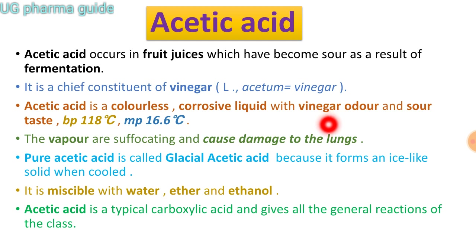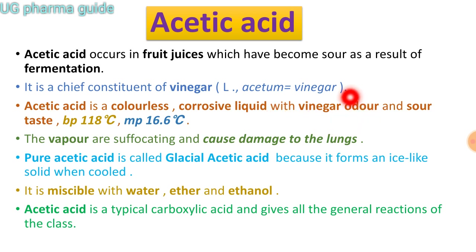तो acetic acid क्या है? Fermented fruit juice में पाया जाता है. जैसे कि apple vinegar आपने सुना है, तो apple vinegar में acetic acid पाया जाता है. Apple vinegar कैसे बनेगा? Apple को ferment करके. और vinegar का यह main constituent है. Vinegar भी बहुत प्रकार के होते हैं — white vinegar, apple vinegar — अलग-अलग vinegars होते हैं, तो उनमें यह पाया जाता है, उनका chief constituent है.